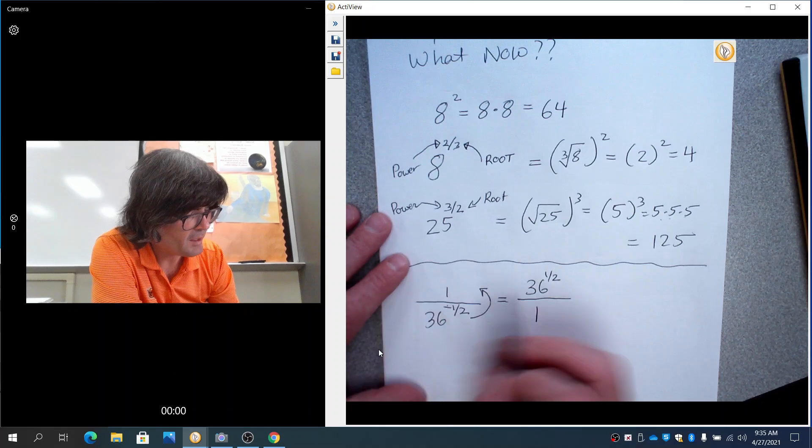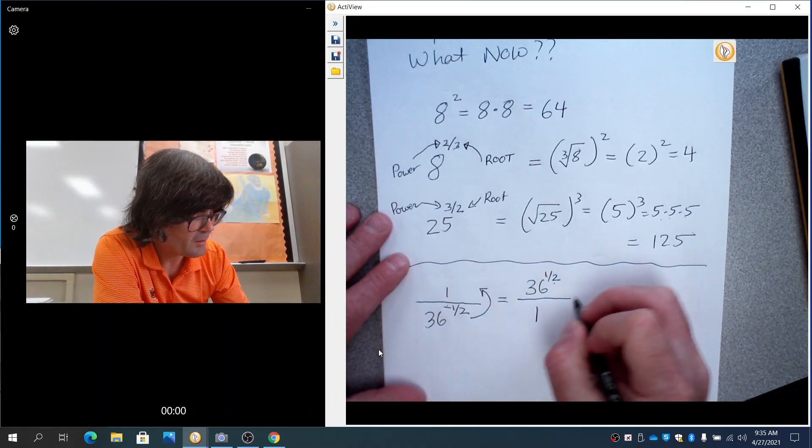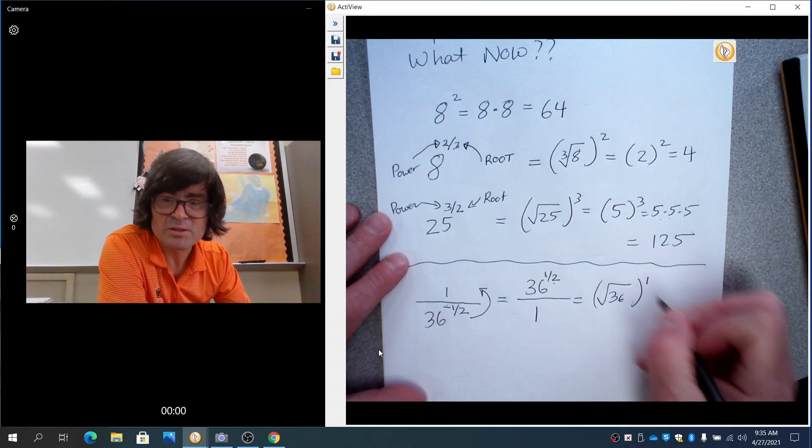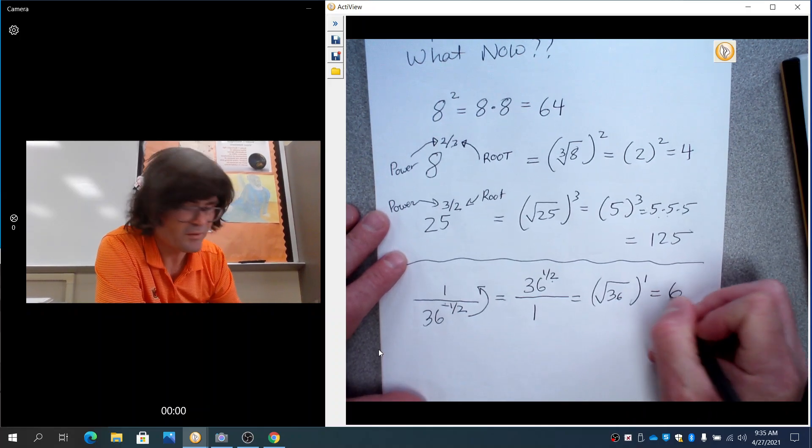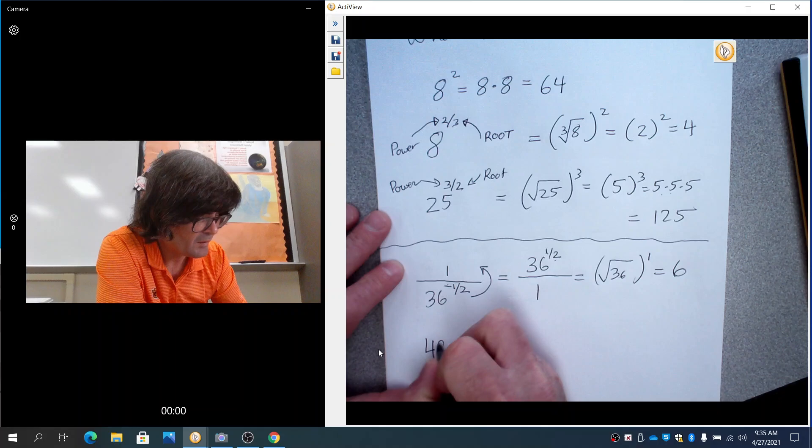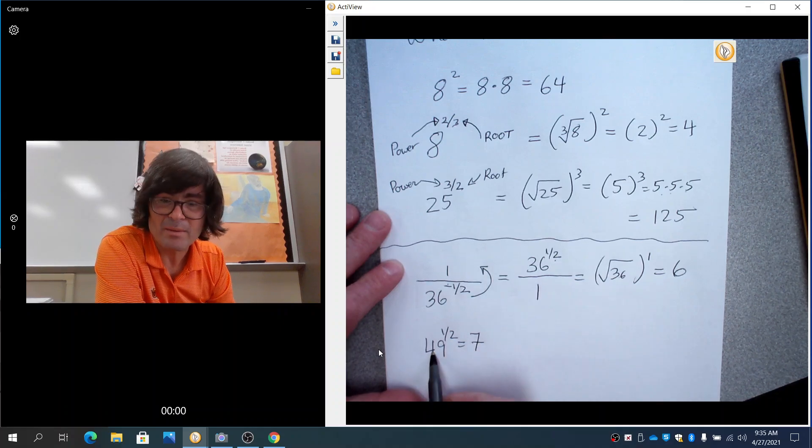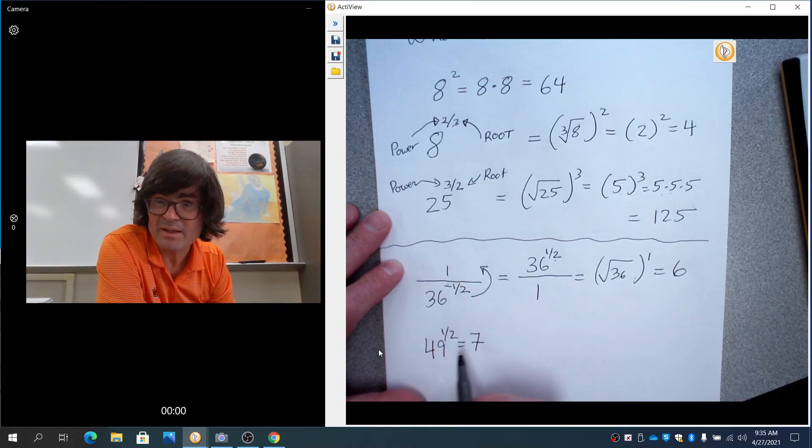And now the bottom is the root, the top is the power. So this is really the square root of 36 to the 1st, or just the square root of 36, which is 6. And from that, hopefully you can kind of tell that 49 to the 1 half is 7, because that means square root of 49, and that's 7.